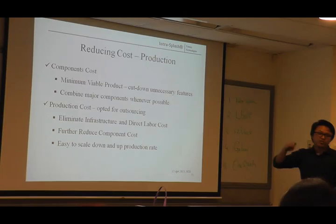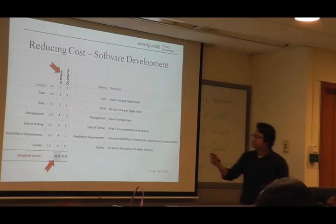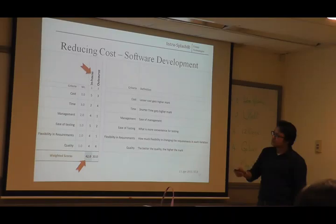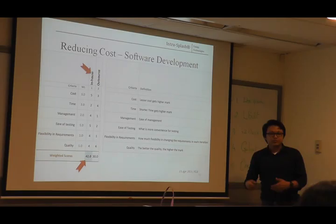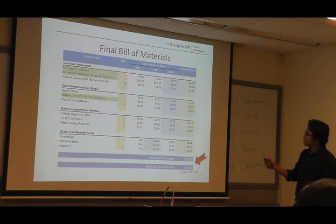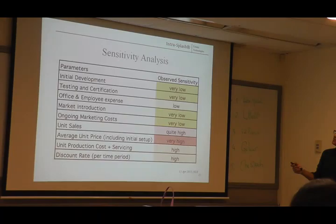For production cost, it is obviously very expensive in Singapore, so we decided to go for outsourcing, and we can reduce costs a lot from component costs because the factory producing our product is in the same place that produces the components — like Shenzhen in China — and we can easily scale up and down. For reducing software development cost, we compared in-house versus outsourcing, and we realize in-house development is much cheaper, more manageable, and easier to add requirements. Our final manufacturing cost by unit is reduced down to $34 from $106.